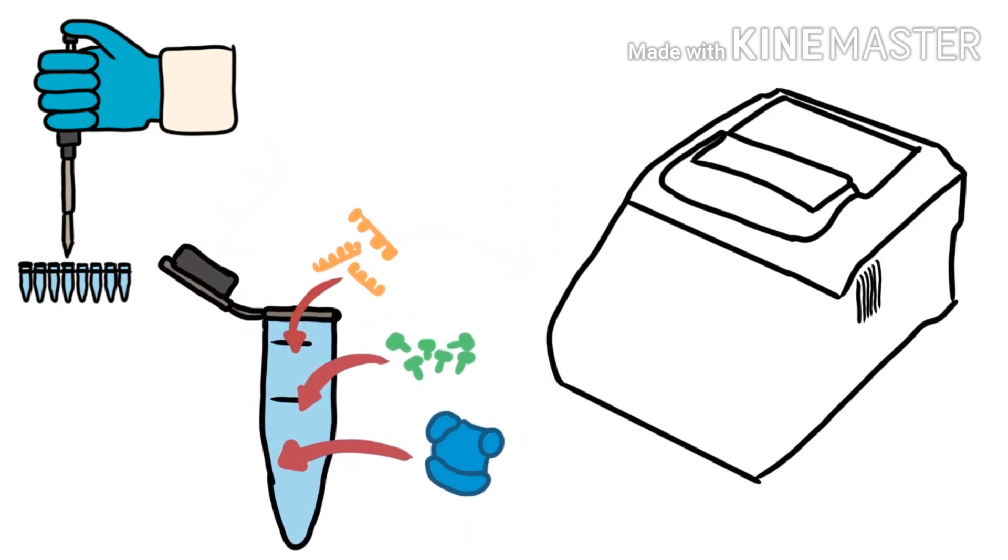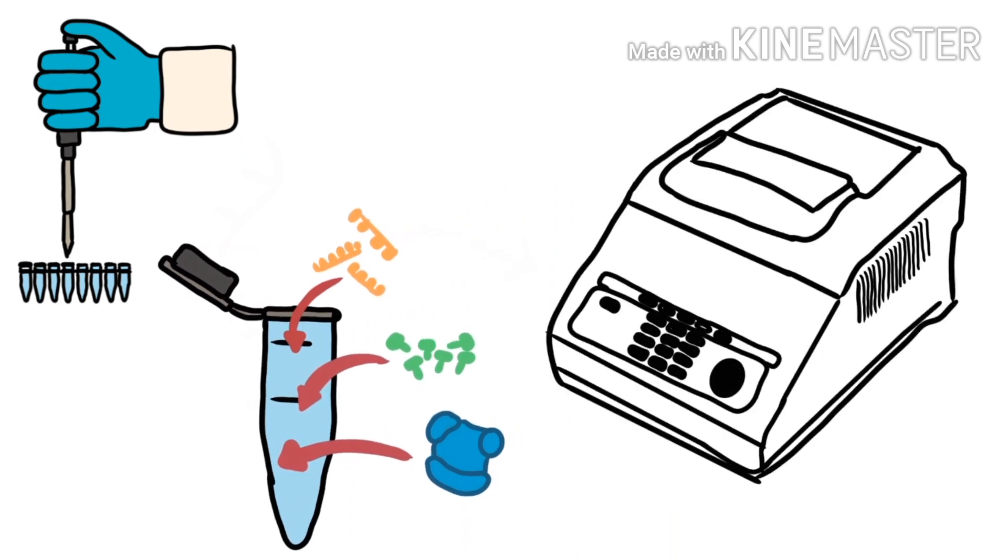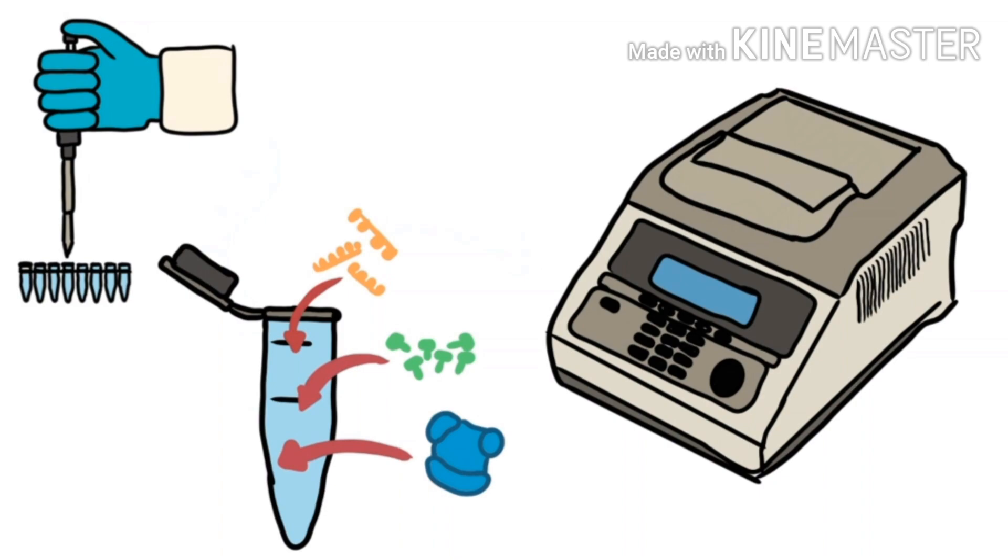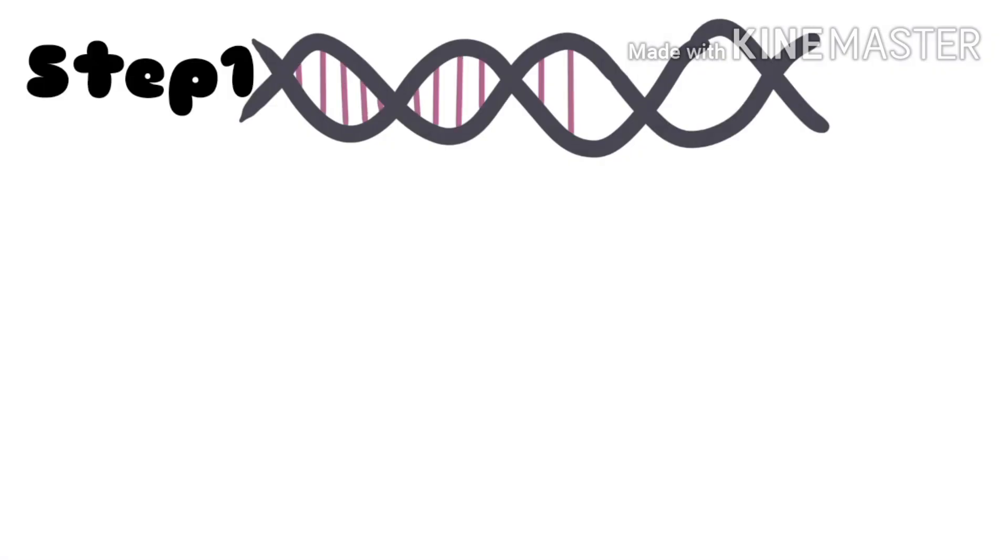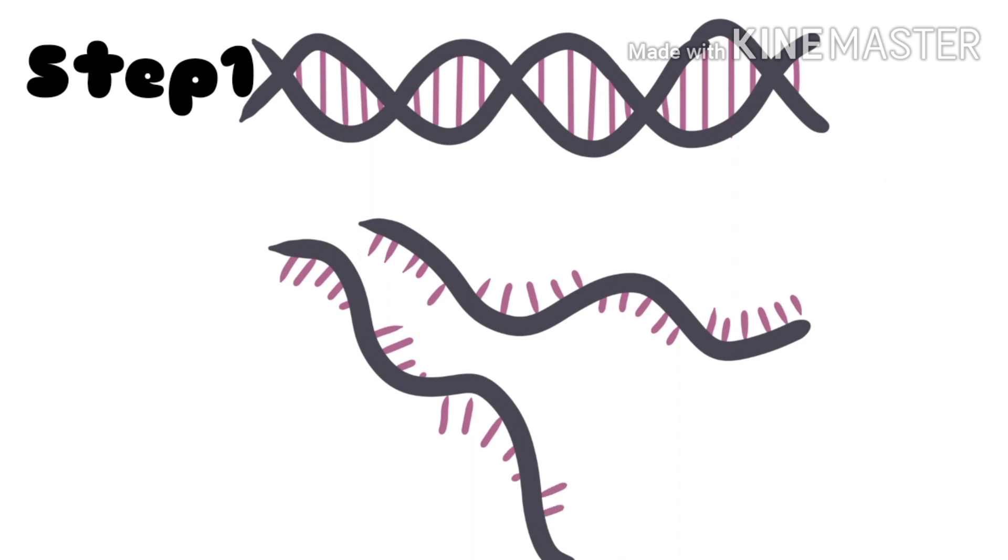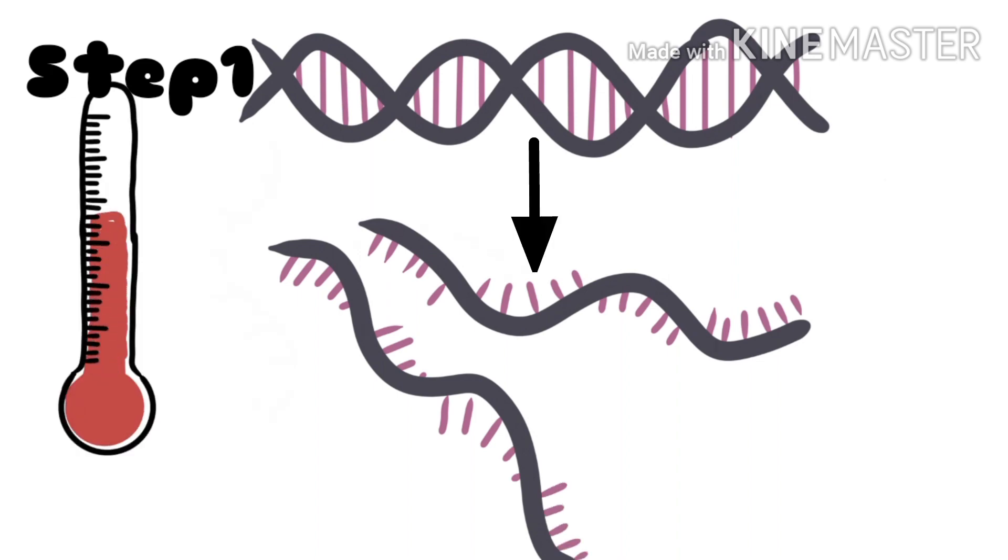After adding all the ingredients, the test tube is put in a thermal cycler, which is a machine that changes temperature in a cyclic manner. In the first step, the two strands of DNA are separated by high temperature, a process known as denaturation.